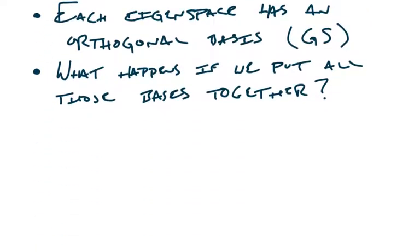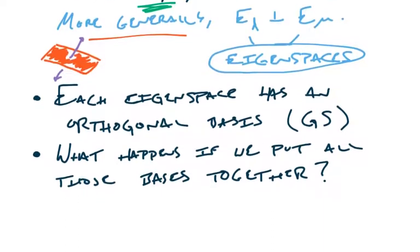Each eigenspace has an orthogonal basis, which is possible because we know Gram-Schmidt. The question I left off with last time — drawing an analogy to the Frenet frame vectors (unit tangent, unit normal, and unit binormal) — is: what happens if we put all these different orthogonal bases of all the eigenspaces together into one large collection of vectors?